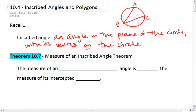So in this picture, angle ABC is an inscribed angle. First thing we need to recognize is that the measure of an inscribed angle is half the measure of its intercepted arc.